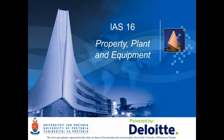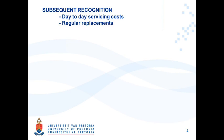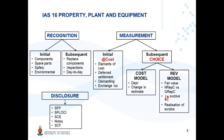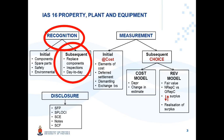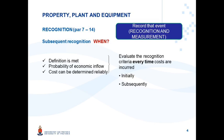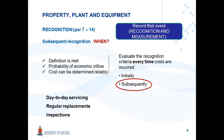IAS 16 Property, Plant and Equipment — subsequent recognition: day-to-day servicing costs and regular replacements. This is a summary of the total content of IAS 16. Accounting treatment comprises recognition, measurement, and disclosure. This presentation focuses on recognition, and specifically subsequent recognition, which refers to costs incurred relating to an item of property, plant and equipment subsequent to initial recognition. Every time these costs are incurred, you have to evaluate them against the recognition criteria in IAS 16. These subsequent costs refer to day-to-day servicing, regular replacement, and major inspections.